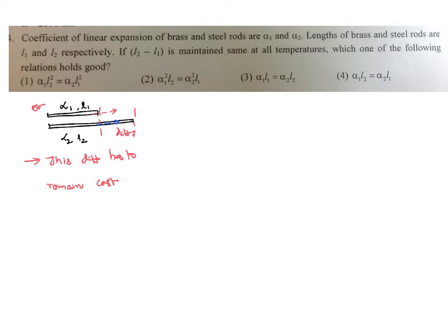For example, if this is 5 cm and this is 10 cm initially, and this expands by 1 cm to become 6 cm, then the other must expand by 1 cm to become 11 cm, so that the difference between them remains 5 cm.